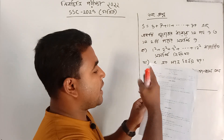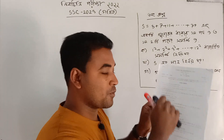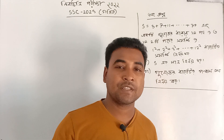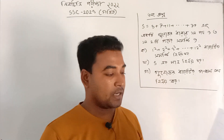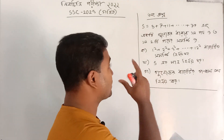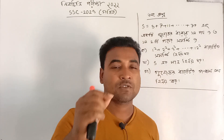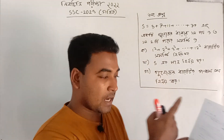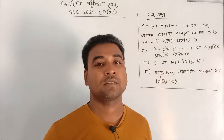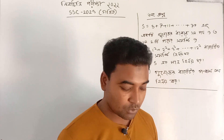One number and two number — I have already given the same number. I have given the same number in the class and in the description box.